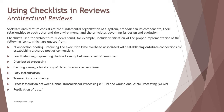Additional architectural checklist items include: caching — using a local copy of data to reduce excess access time; lazy instantiation — avoiding the overhead of instant object creation; transaction concurrency — the number of concurrent users working on a transaction at any point of time; process isolation between OLTP (Online Transactional Processing) and OLAP (Online Analytical Processing); and replication of data — all important considerations in architectural review.